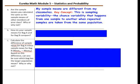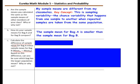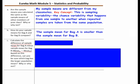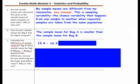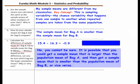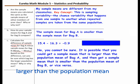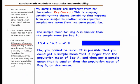Question B: How do your sample means for Bag A and Bag B compare? The sample mean for Bag A is smaller than the sample mean from Bag B. Calculate the difference: sample mean for Bag A minus sample mean for Bag B. For example, 15.4 for Bag A minus 16.3 for Bag B gives a difference of negative 0.9. Based on this difference, can you be sure which bag has the larger population mean? No — it is possible to get a sample mean larger than the population mean of Bag A and a sample mean smaller than the population mean of Bag B, or vice versa.